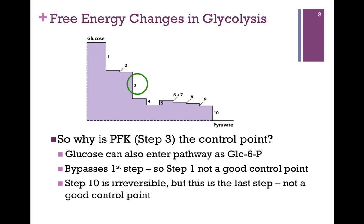In the first place, for Step 1, as we'll see in a later lesson, that step can be bypassed. Glucose can actually enter the pathway as glucose 6-phosphate at Step 2 and completely miss Step 1. So if for any reason a step can be skipped, that's not a good control point.